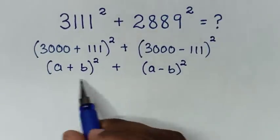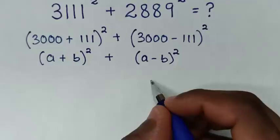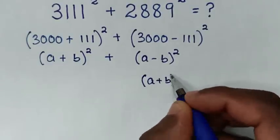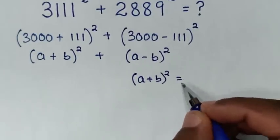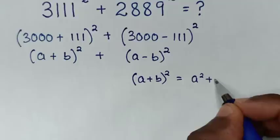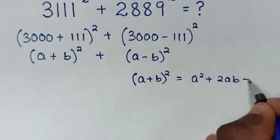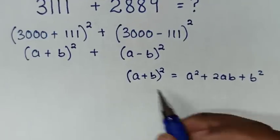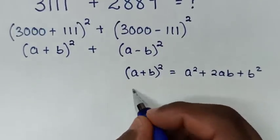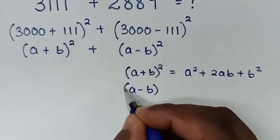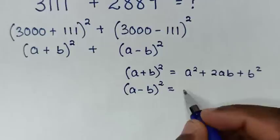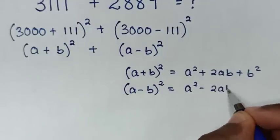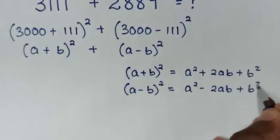Then we'll expand this part of the formula. (A plus B) squared is equal to A squared plus 2AB plus B squared. Then we'll also expand (A minus B) squared, which is equal to A squared minus 2AB plus B squared.